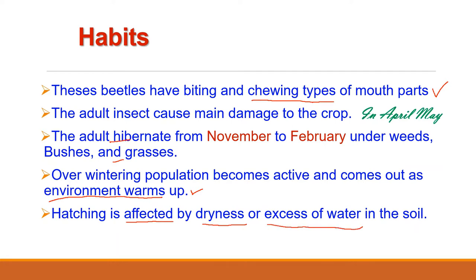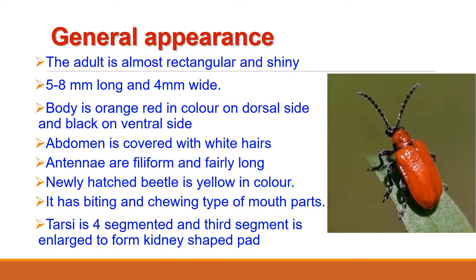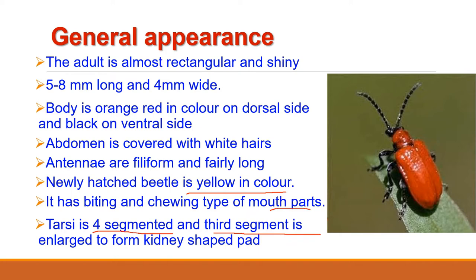Hatching of eggs is adversely affected if the soil surface gets dry after egg laying, and excess moisture also adversely affects hatching. The adult beetles are oblong or oval in shape, measuring about 5 to 8 mm in length and about 4 mm in width. They have a bright orange-red body with a black undersurface. The dorsal side is bright red and abdomen is black in colour, covered with whitish soft hairs. The antennae are fairly long. Newly hatched beetles are yellow in colour, which later turn into orange-red. It has biting and chewing type of mouth parts.